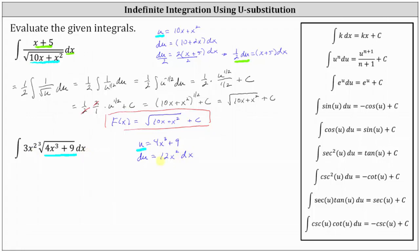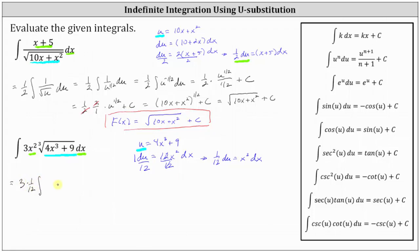Notice we have 3x squared dx in the integral, not 12x squared dx, so we have an option. We could divide both sides by four so that we have 3x squared dx on the right, or we can just solve for x squared dx. Simplifying, we have one twelfth du equals x squared dx. Going back to the integral, we factor out the three and replace x squared dx with one twelfth du. We write the integral in terms of u: factoring out the three, x squared dx becomes one twelfth du, and then we have the cube root of u, equal to u to the one third. So this becomes three times one twelfth, which is one fourth, times the integral of u to the one third du.